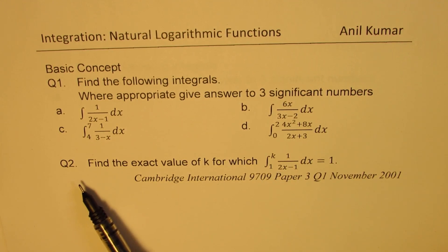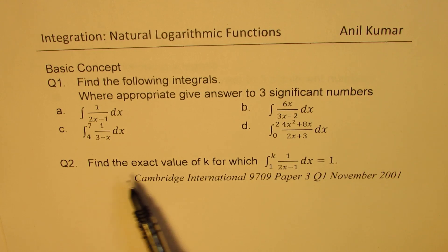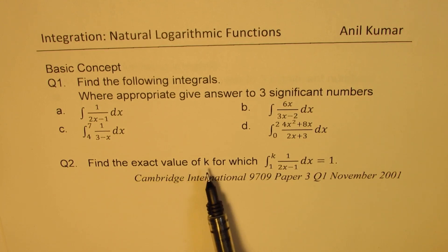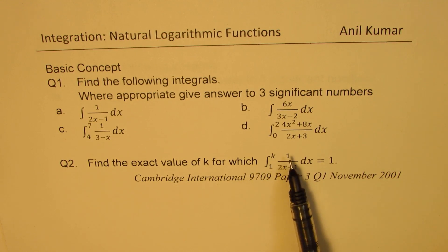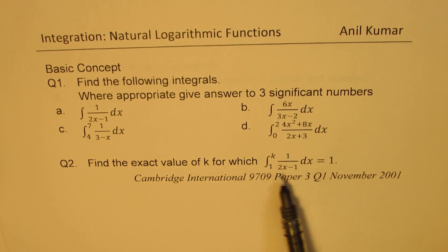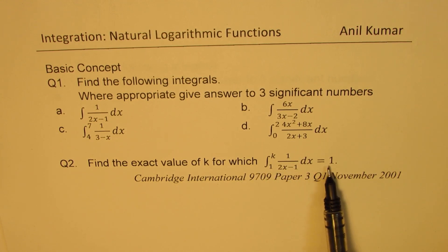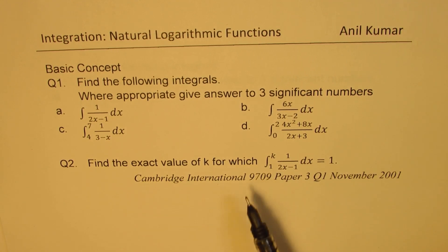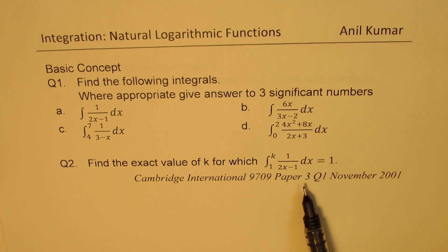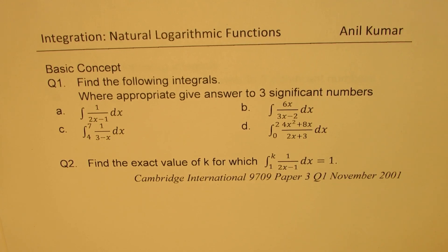Question number two: find the exact value of k for which the definite integral from 1 to k of 1 over (2x minus 1) dx equals 1. This question has been picked up from Cambridge International 9709, paper 3, question 1, November 2001.